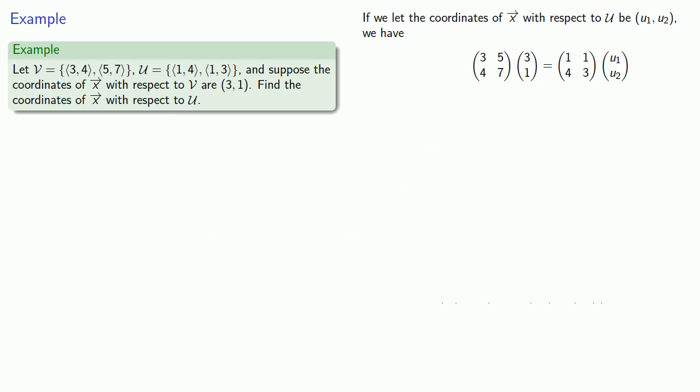And again, it'll help to remember what this really means. This is a linear combination that consists of taking 3 of the vector (3, 4) and 1 of the vector (5, 7). And those correspond to the coordinates of x with respect to our first vector space V. What we want to do is find the linear combination of (1, 4) and (1, 3) that give us the same vector.